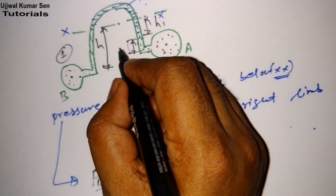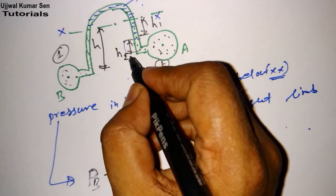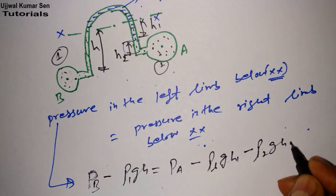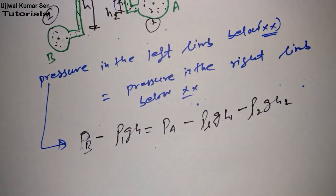Again another liquid we are having from here to here - let's say this is H_2. So minus rho_2 g H_2.